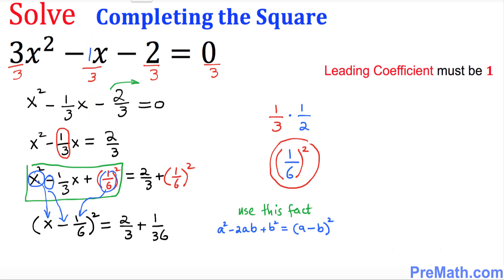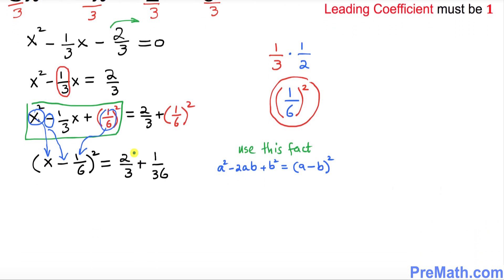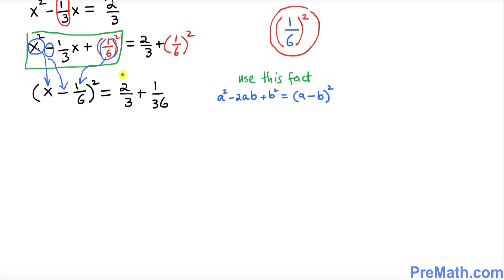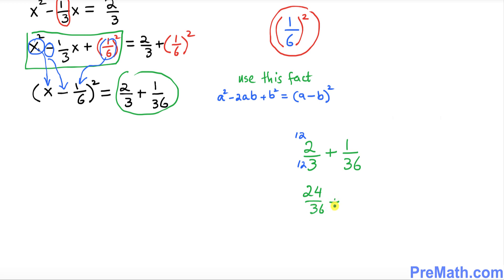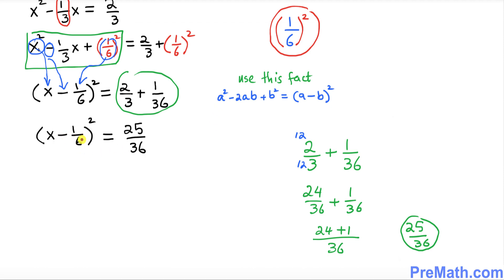The next step is to simplify the fraction on the right hand side. We want a common denominator of 36. Multiplying 2/3 top and bottom by 12 gives 24/36, plus 1/36, which equals 25/36. So we have (x - 1/6)² = 25/36 as the simplified form.